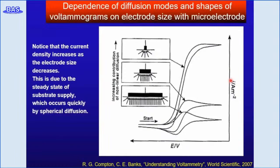This slide shows the CV response of an analyte with different electrode sizes. Note the current is normalized by electrode area and plotted as current density. When the electrode size decreases, the current density increases dramatically. This is because the analyte diffuses to the electrode effectively by spherical diffusion with the edge effect at the microelectrode. In the case of a microelectrode, the limiting current is independent of the scan rate.